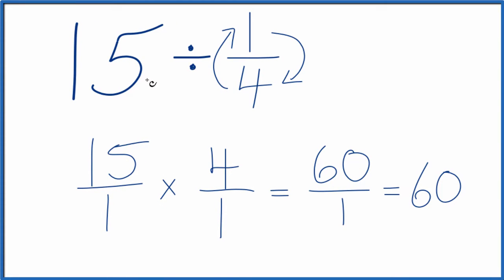So when we divide 15 by 1 fourth, we get 60. If you multiply 60 times 1 fourth, you get 15. So we know we did this correctly. This is Dr. B dividing 15 by 1 fourth. The answer is 60. Thanks for watching.